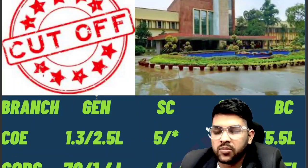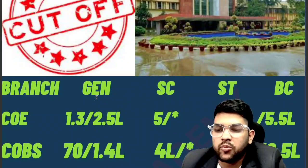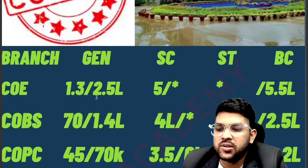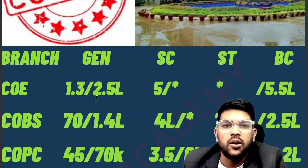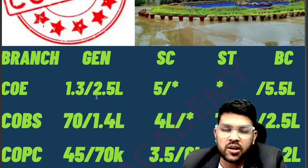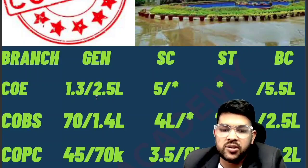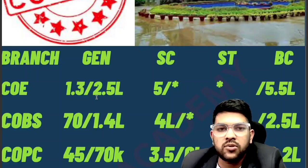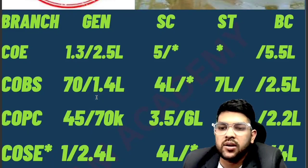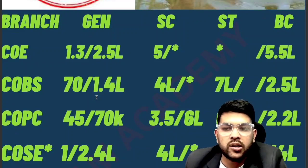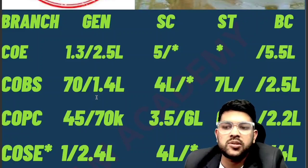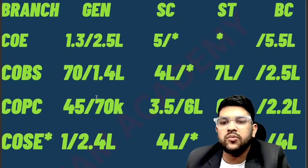For COBS: 70,000 and 1.4 lakh for General; SC 4 lakh; ST 7 lakh; BC 2.5 lakh. For COPC: 45,000 for other state and 70,000 for Punjab — the most in-demand branch, Computer Science in Patiala campus. SC category 3.5 lakh and 6 lakh; ST 6 lakh; BC 2.2 lakh. After the slash, all data is for home state. Note: all ranks listed are CRL general ranks, not category ranks — even for BC, your general rank is used.